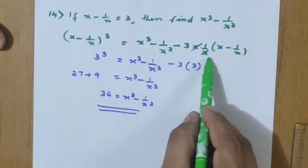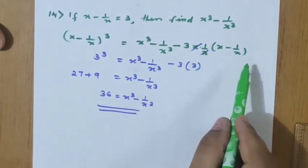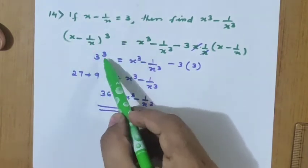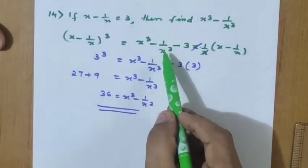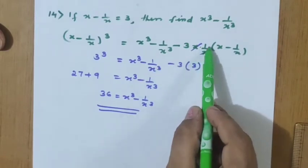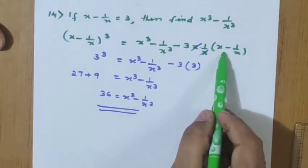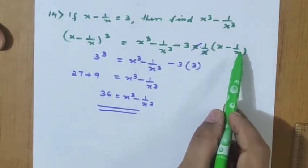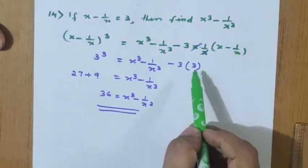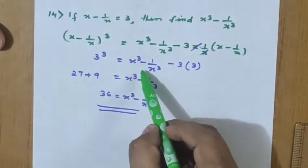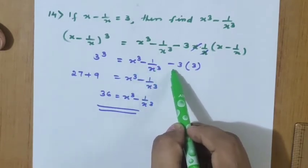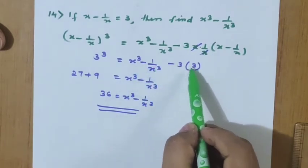Substituting: (x − 1/x)³ becomes 3³. In the middle term, x and 1/x cancel, leaving x − 1/x, so we substitute 3 again. 3³ is 27, and x³ − 1/x³ minus 3 into 3 — that is minus 9.